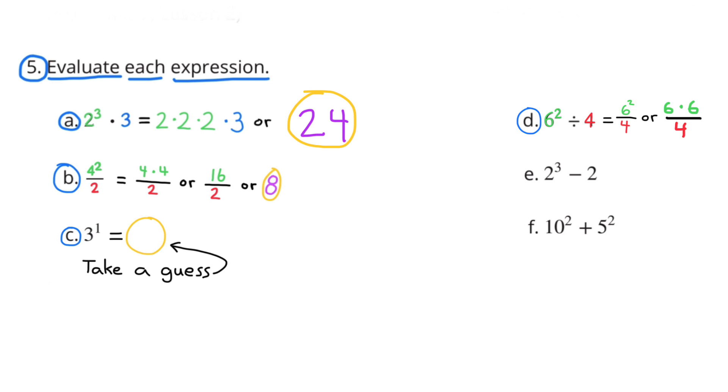Number 5 D. 6 to the power of 2 divided by 4. That's the same as 6 to the power of 2 over 4. Or 6 times 6 divided by 4.